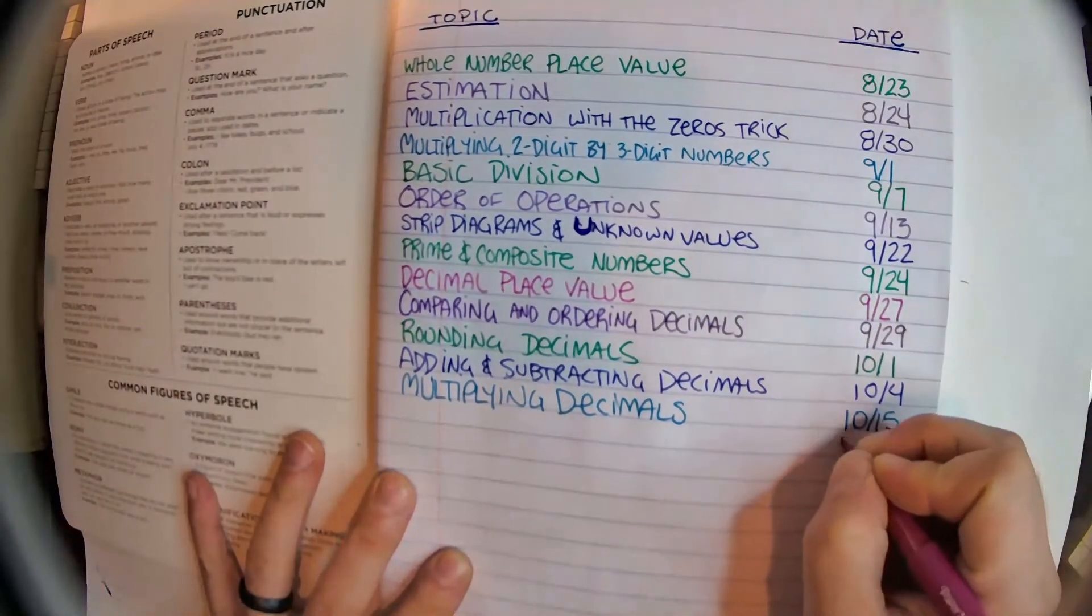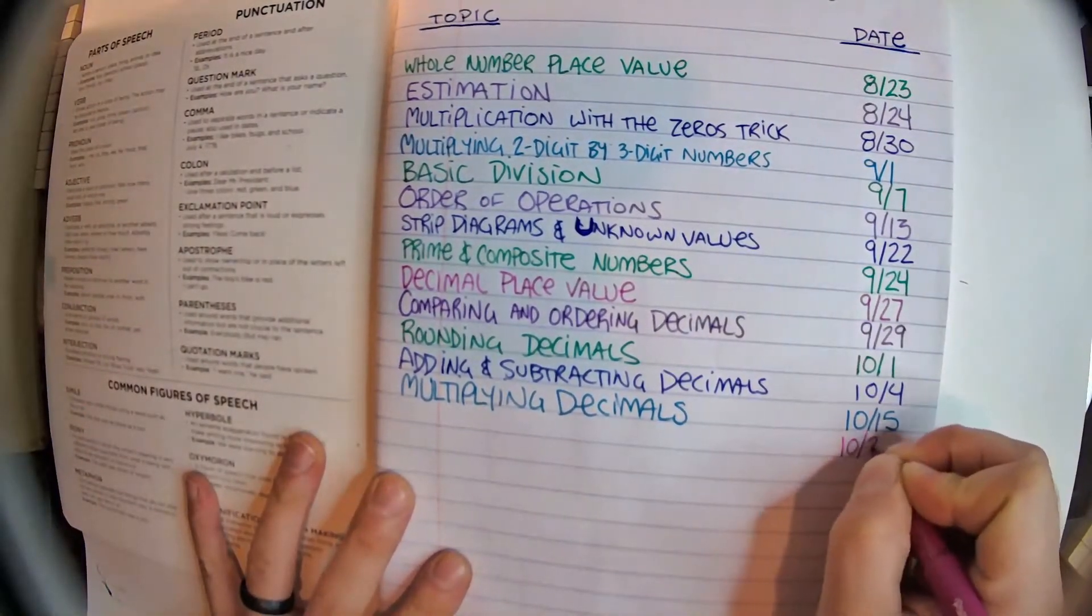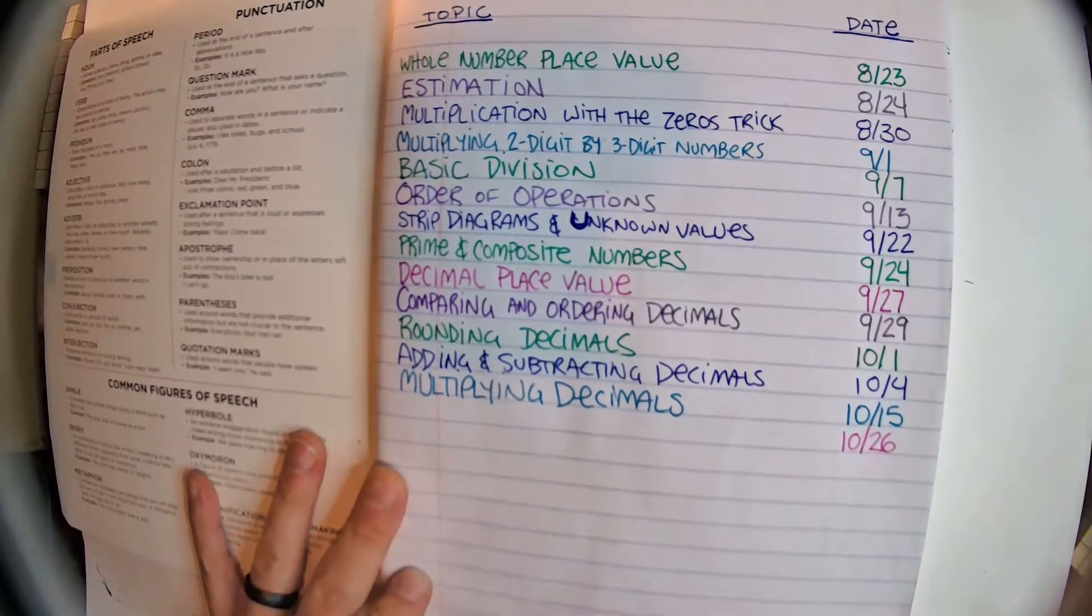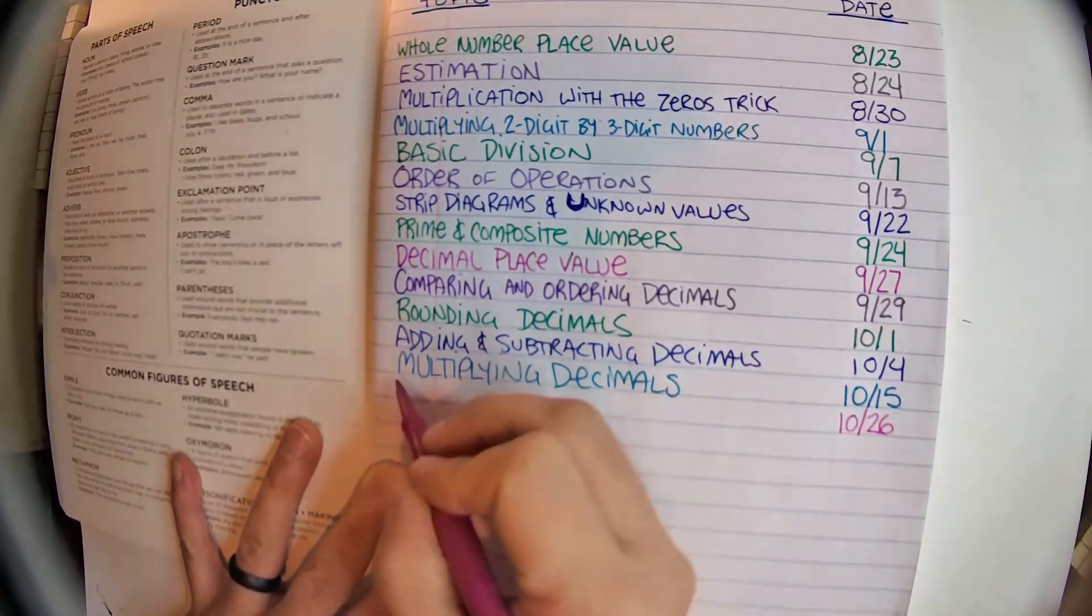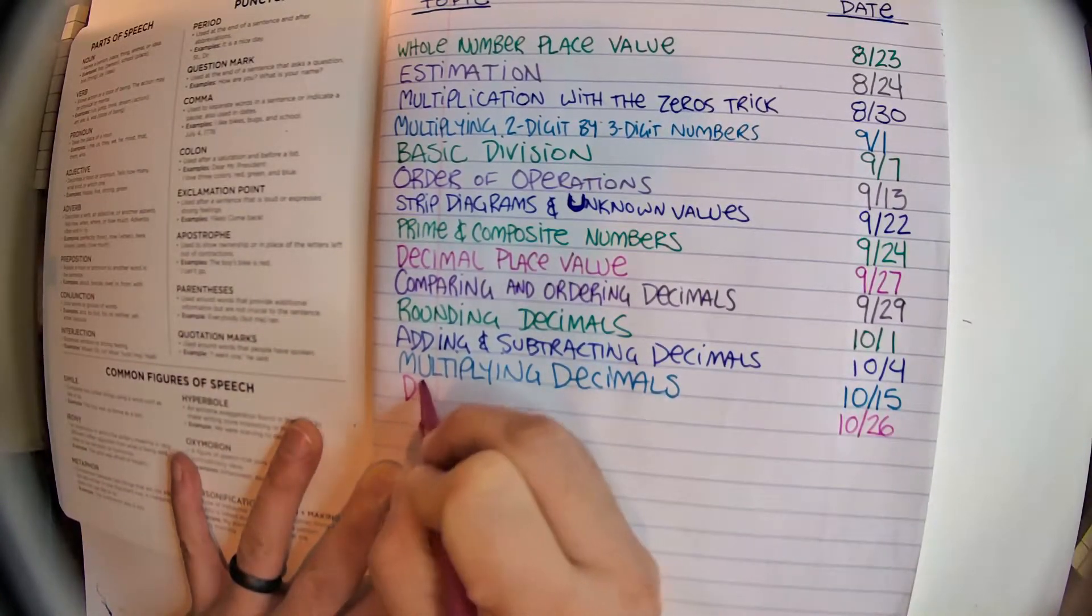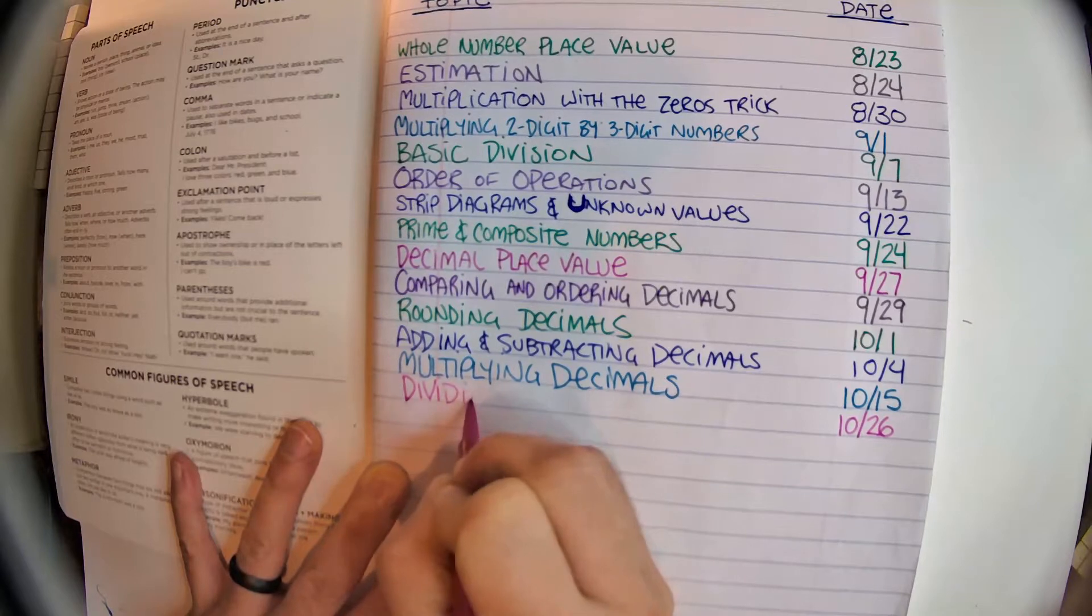Today is, I believe, the 26th of October, right? And after multiplying decimals, what do you think we're going to write about? If you guessed dividing decimals...